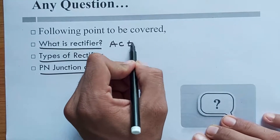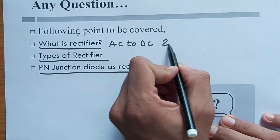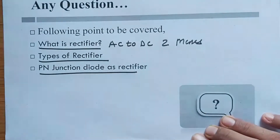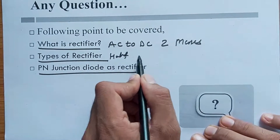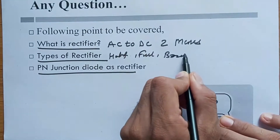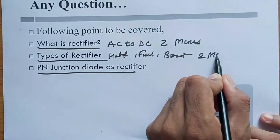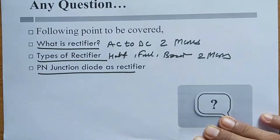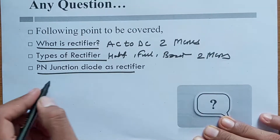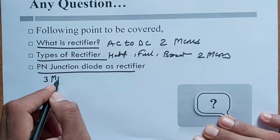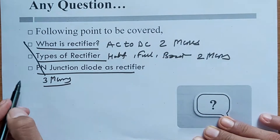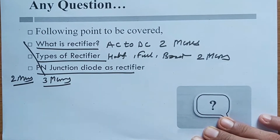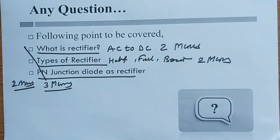To summarize: AC to DC conversion is two marks. Types of rectifiers — half wave, full wave, and bridge rectifier — are two marks. PN junction diode as a rectifier can also be asked for marks. Today we covered mostly two-mark questions. Thank you very much for joining this session.